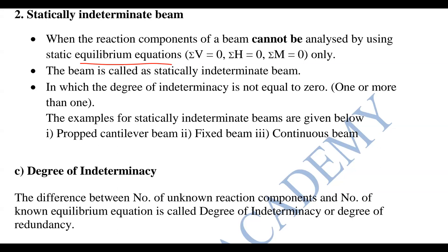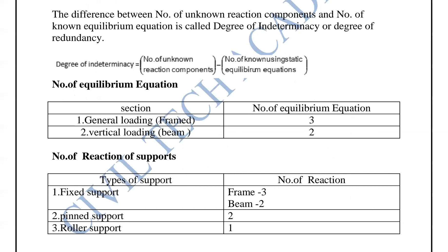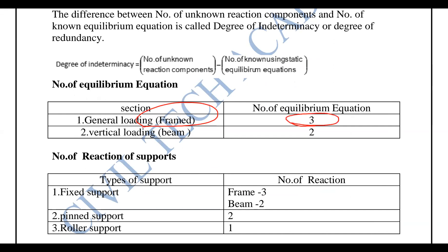Let's look at the statically indeterminate beam: sum of horizontal force equal to 0, sum of vertical force equal to 0, sum of moment equal to 0. These same equations will solve the beam. Let's look at the main difference. The number of equilibrium equations: for a framed structure it is 3, and for a beam it is 2.